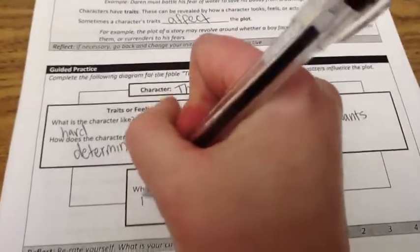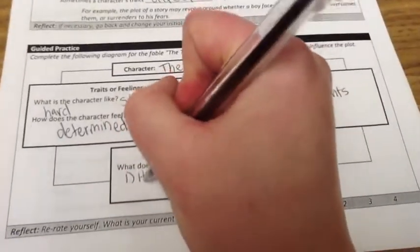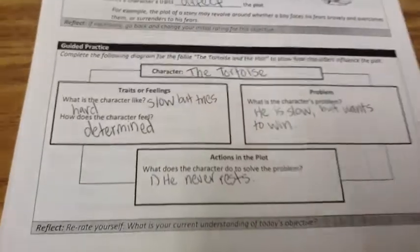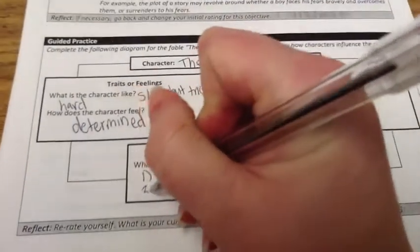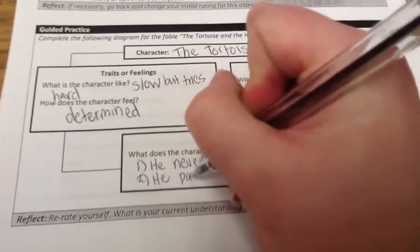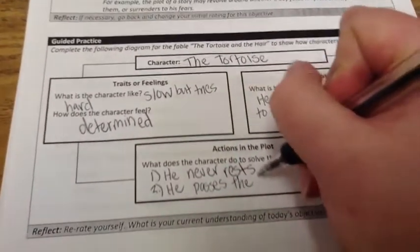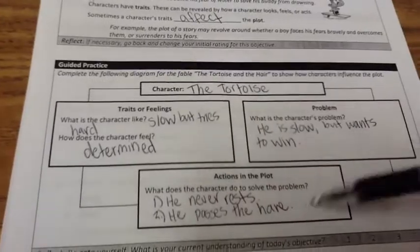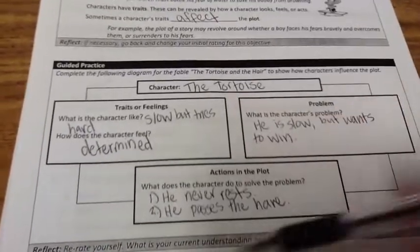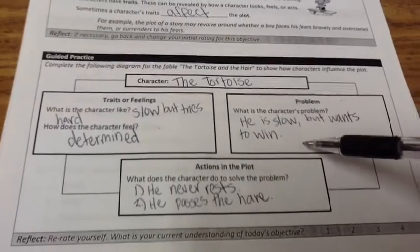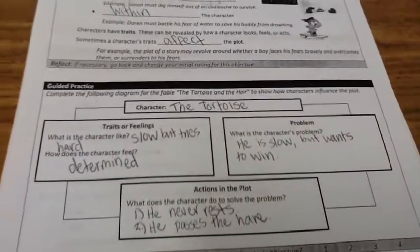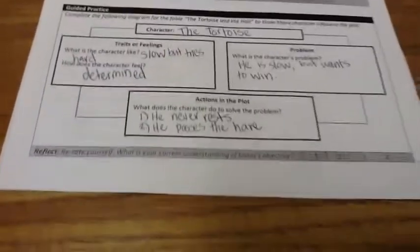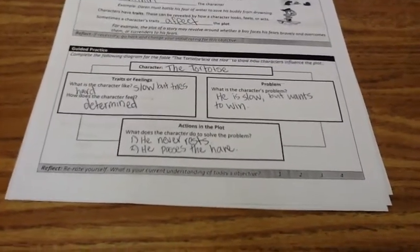Now we think about the tortoise's traits and feelings, and how his character helps to solve the problem — what things he does to solve it, because if he wasn't who he is, he wouldn't do what he does. First, he keeps going; he never stops, he never rests, he just keeps going. He doesn't give up. And eventually he passes the hare, who has been resting. These are the things he does because he's so determined in order to solve his problem. So how he is helps to solve his problem. It's a little complicated, but we're going to practice it a few times and eventually we'll get it. Go ahead and re-rate your current understanding of today's objective, and when you're ready to move on, unpause.